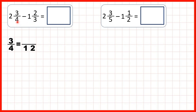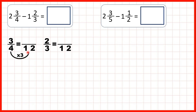12 is in both the 4 and the 3 times tables. So we can find equivalent fractions to 3 quarters and 2 thirds which have a denominator of 12. We use multiplication to find equivalent fractions, and 4 times 3 is 12, so we do the same to the numerator: 3 times 3 is 9.